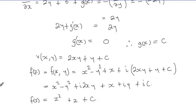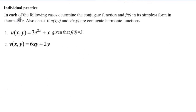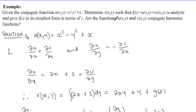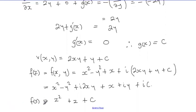I hope this served as an example of recovering part of an analytic function given u or v. For practice, I encourage you to do the following exercise: in each of the following cases, find the conjugate function and f of z in the simplest form in terms of z, and check if u and v are conjugate harmonic functions. Before concluding this exercise, we should also check whether u and v from our problem are conjugate harmonic.